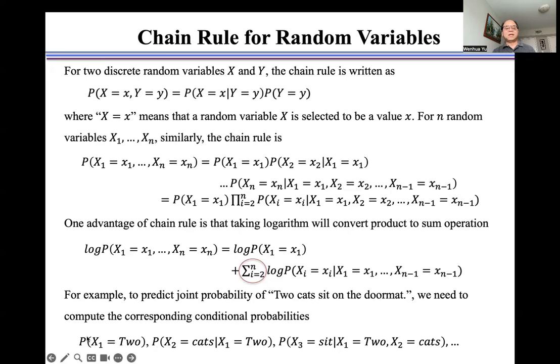This is an independent probability of word 'two', and this is a conditional probability of word 'cats' given word 'two', and so on, until the last word 'doormat'.